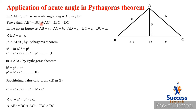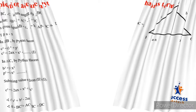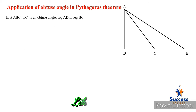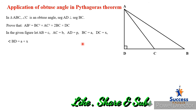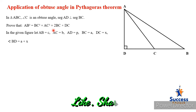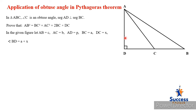Now let's see the second theorem: application of obtuse angle in Pythagoras theorem. The statement to prove is similar to the previous one, with only one change — the sign becomes plus instead of minus. Here, angle C is an obtuse angle because it is greater than 90 degrees, and AD is perpendicular to BC.